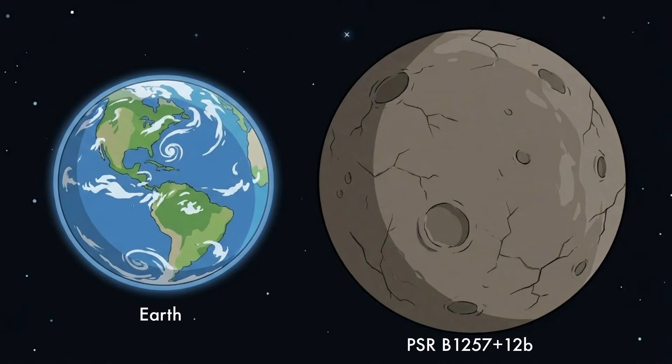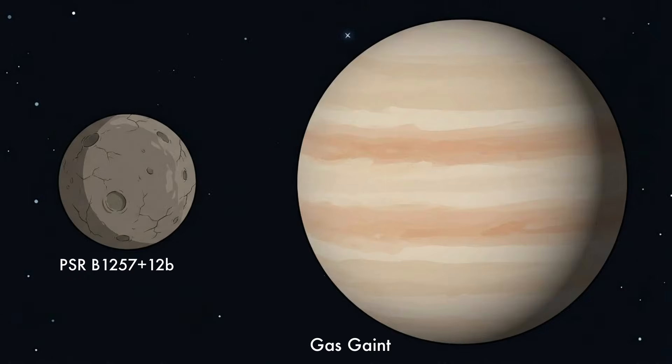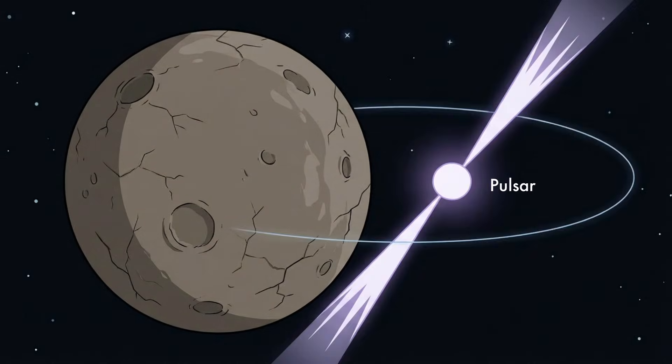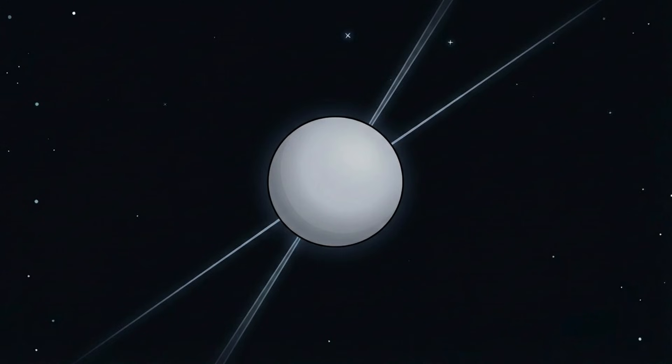The planet is estimated to be roughly Earth-sized or slightly larger, making it small compared to gas giants. What makes it strange is not its size or distance, but what it orbits. This planet circles a pulsar. The star it orbits is not alive.